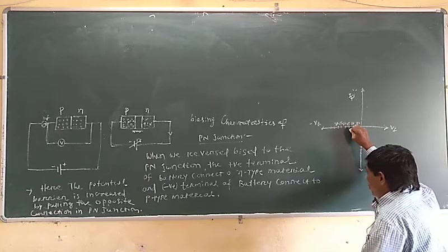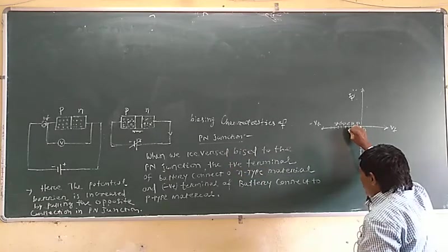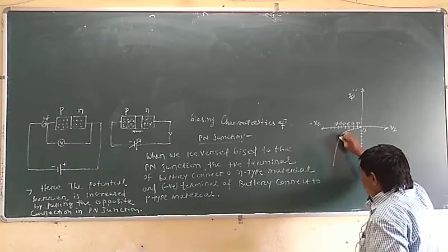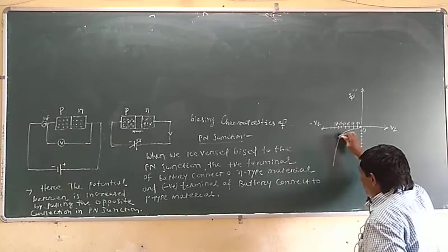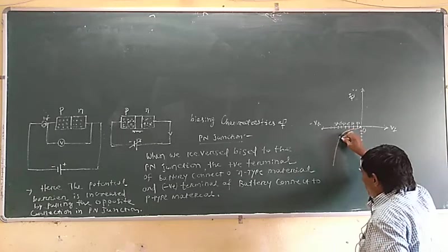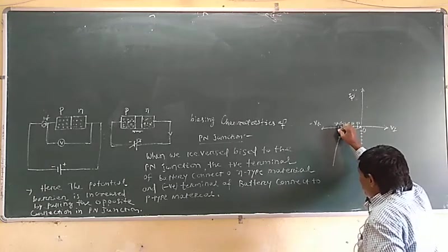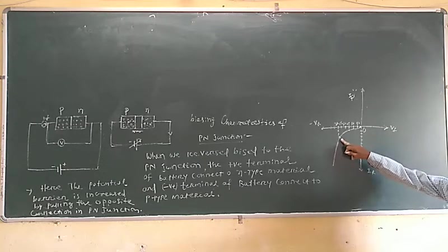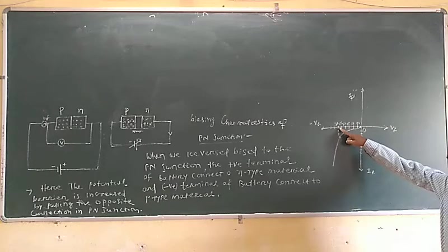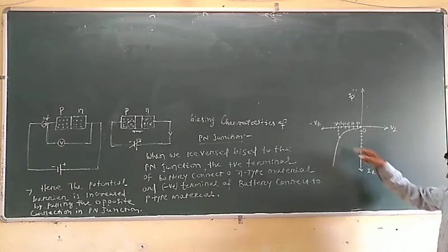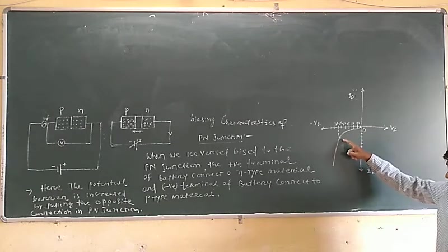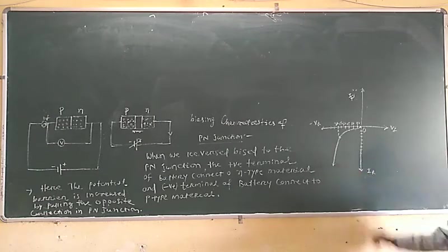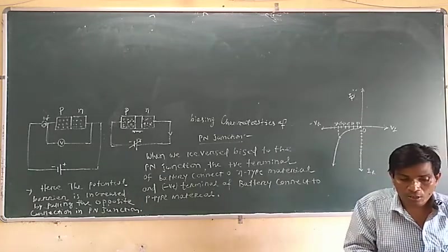If we further increase the reverse voltage, at a particular point D, the reverse current rapidly flows. This point is known as the breakdown point, and this particular voltage is known as the breakdown voltage. Breakdown voltage is that voltage at which the reverse current starts to flow rapidly. After the breakdown voltage, the reverse current rapidly flows through the junction, and this reverse current permanently damages the PN junction.